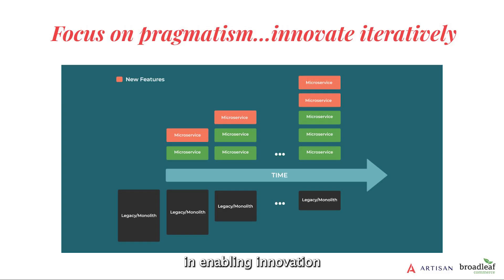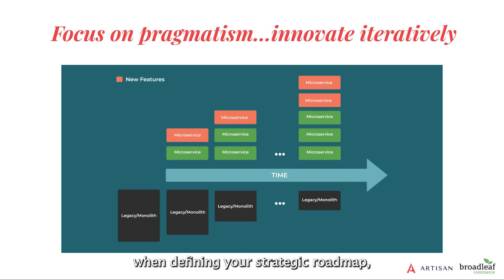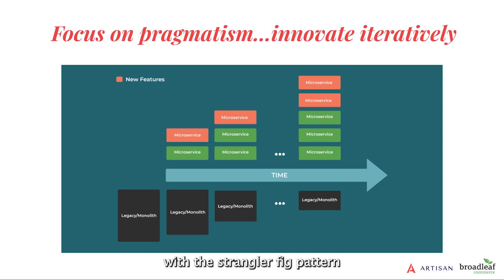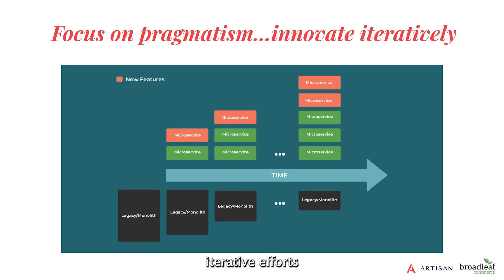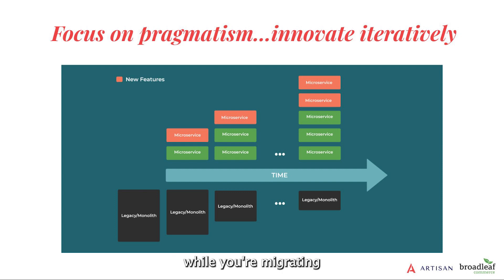The third principle in enabling innovation is focusing on pragmatism by innovating iteratively. When defining your strategic roadmap, just like Rob was talking about with the Strangler Fig pattern, plan on evolving your existing large systems in smaller iterative efforts, and then introduce new features while you're migrating those legacy capabilities.